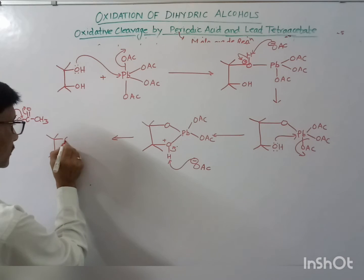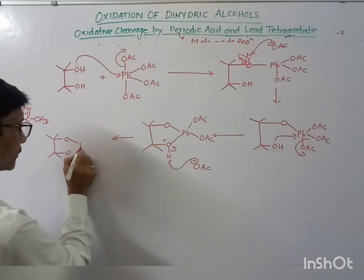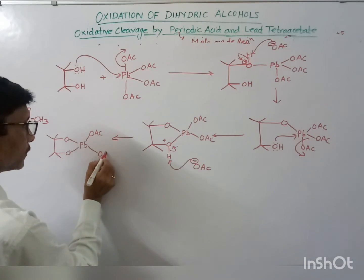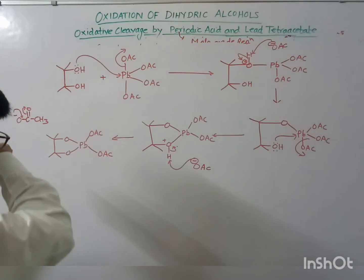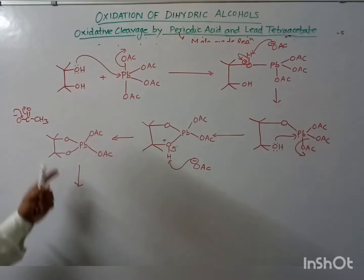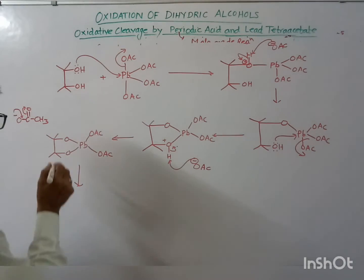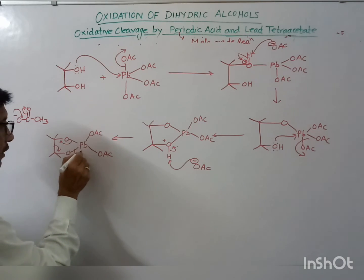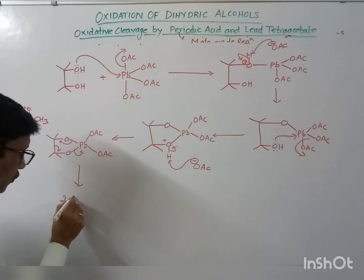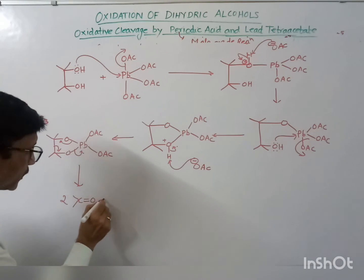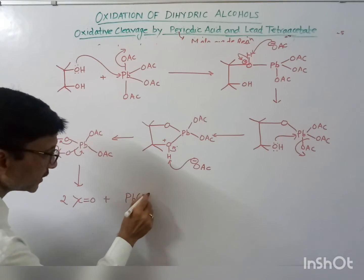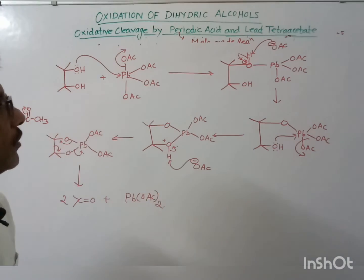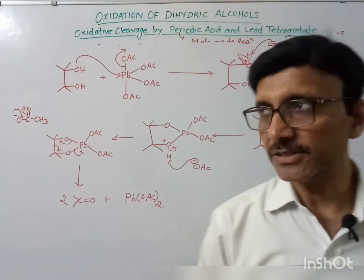In the next step, oxidative cleavage of the carbon-carbon bond occurs, giving two molecules of the carbonyl compound plus lead diacetate. This is the simple mechanism for the oxidation of a diol using lead tetraacetate.